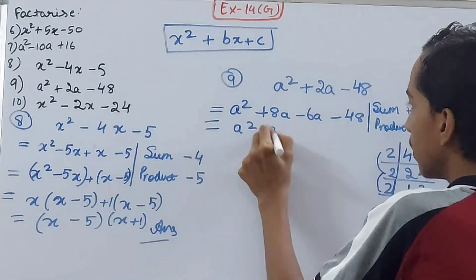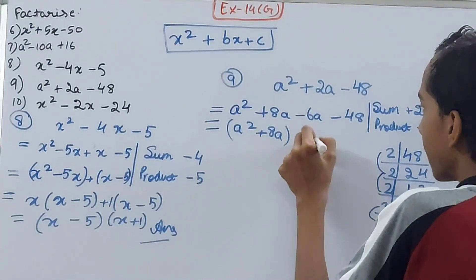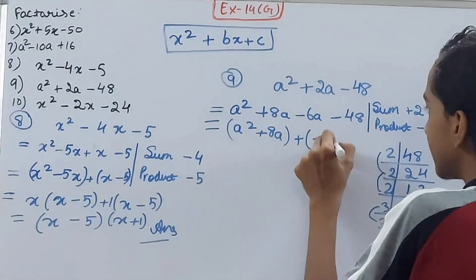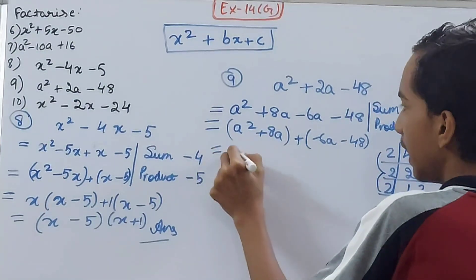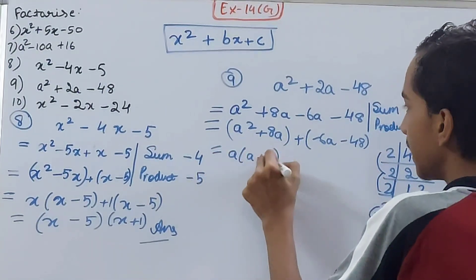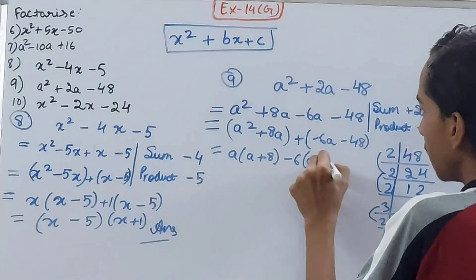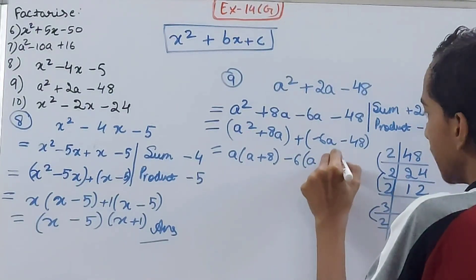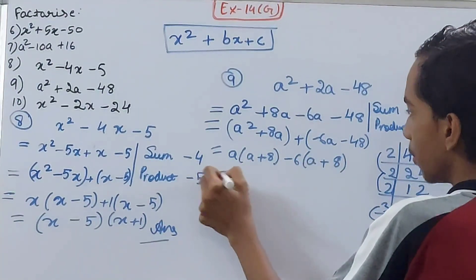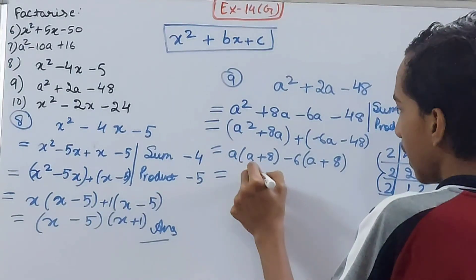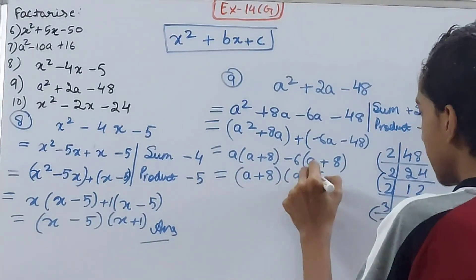Now split: a squared plus 8a in one group, and minus 6a minus 48 in another group. Take a common to get a plus 8, and take minus 6 common to get a plus 8. Taking a plus 8 common from both groups gives the final answer: a plus 8 into a minus 6.